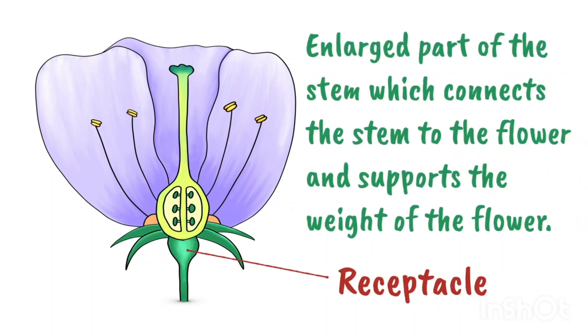The receptacle is an enlarged part of the stem which connects the stem to the flower and supports the weight of the flower.